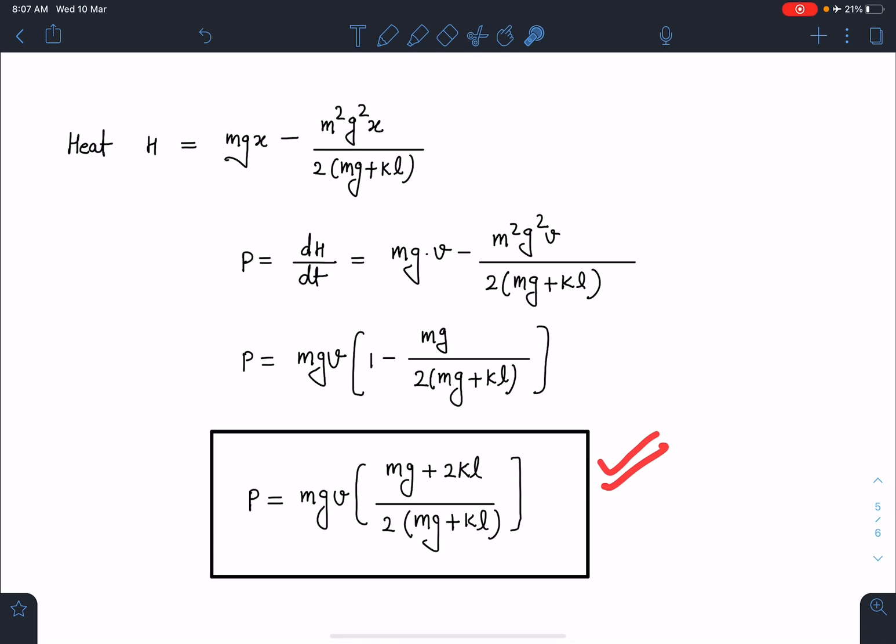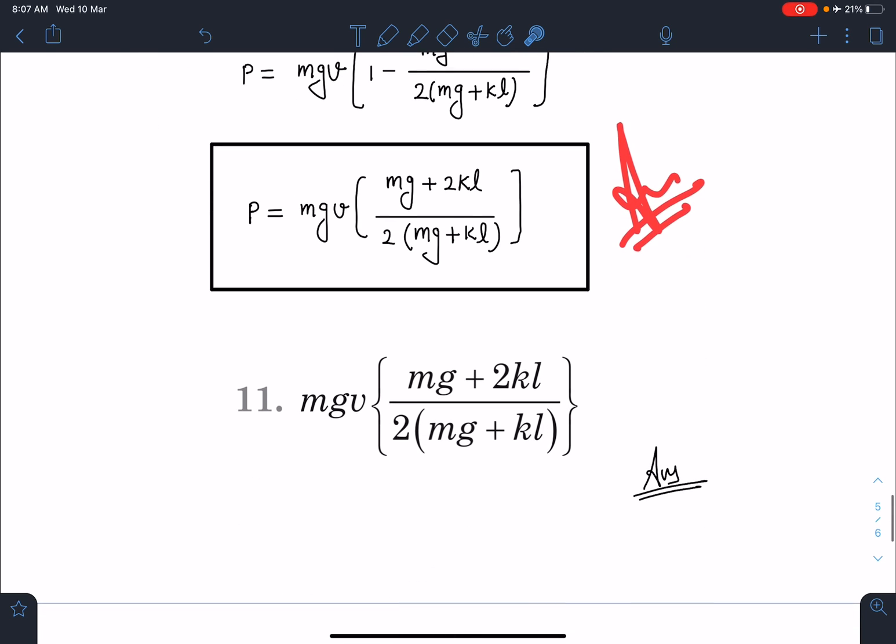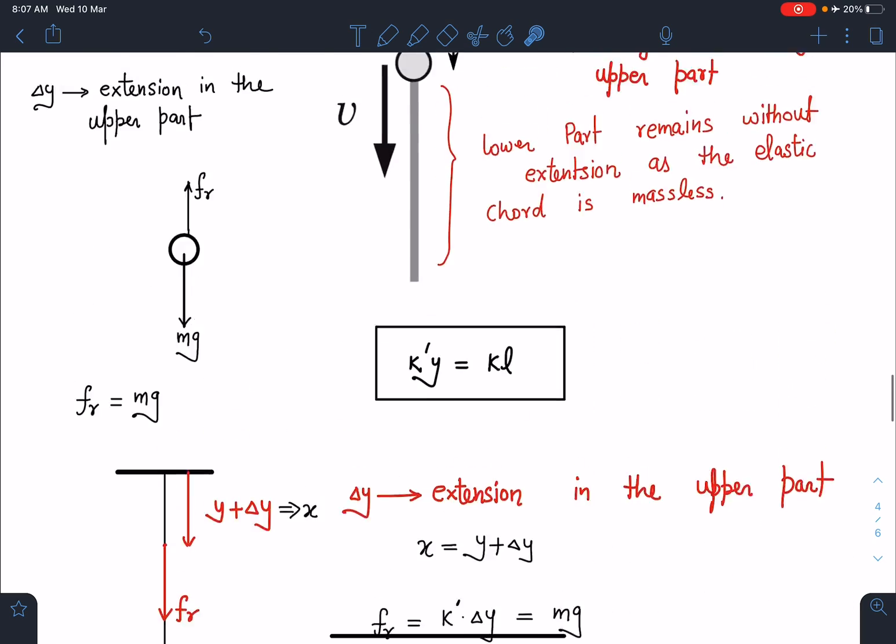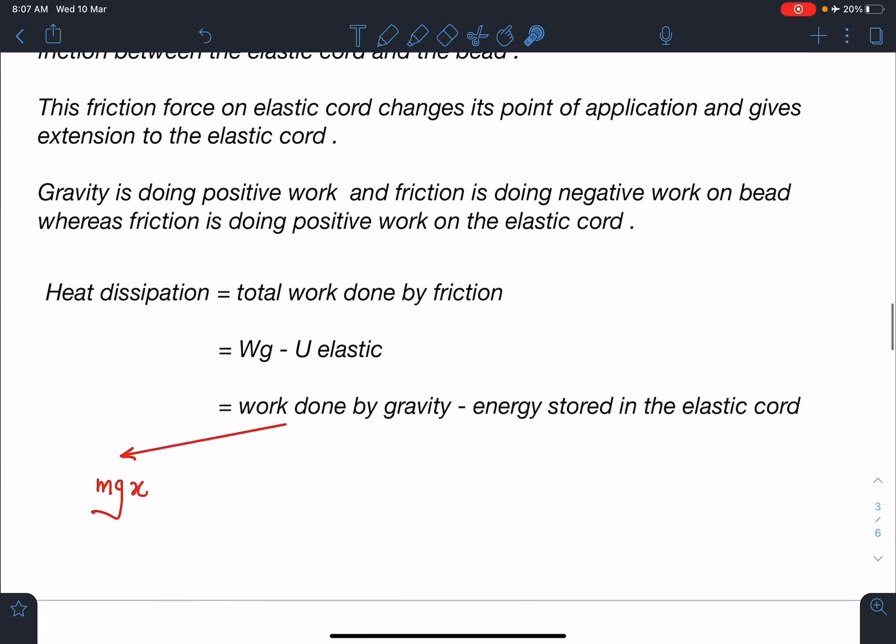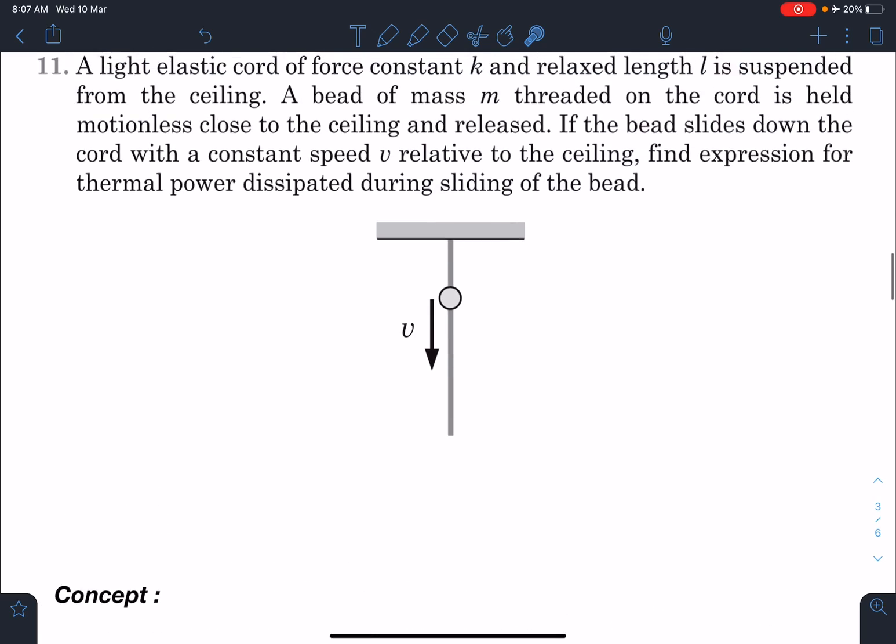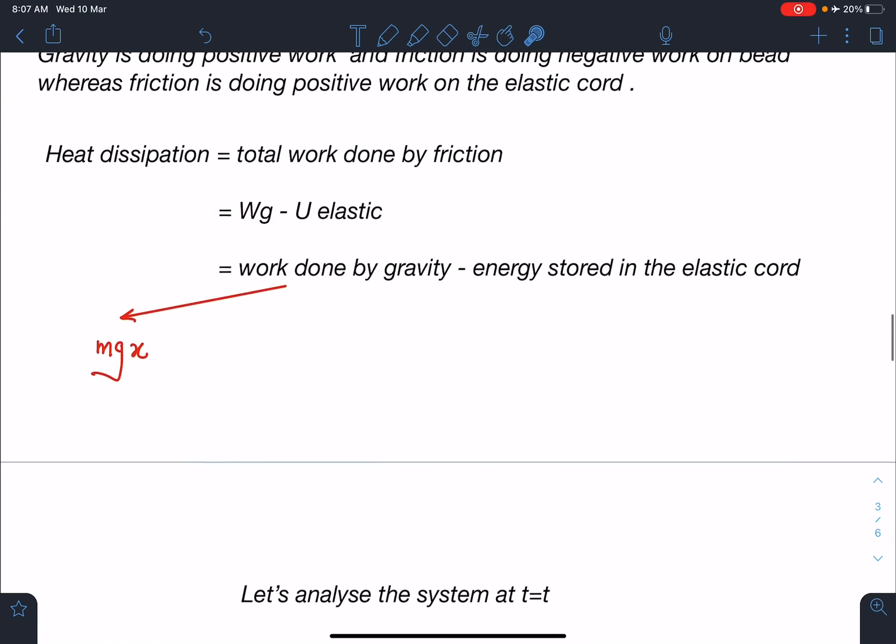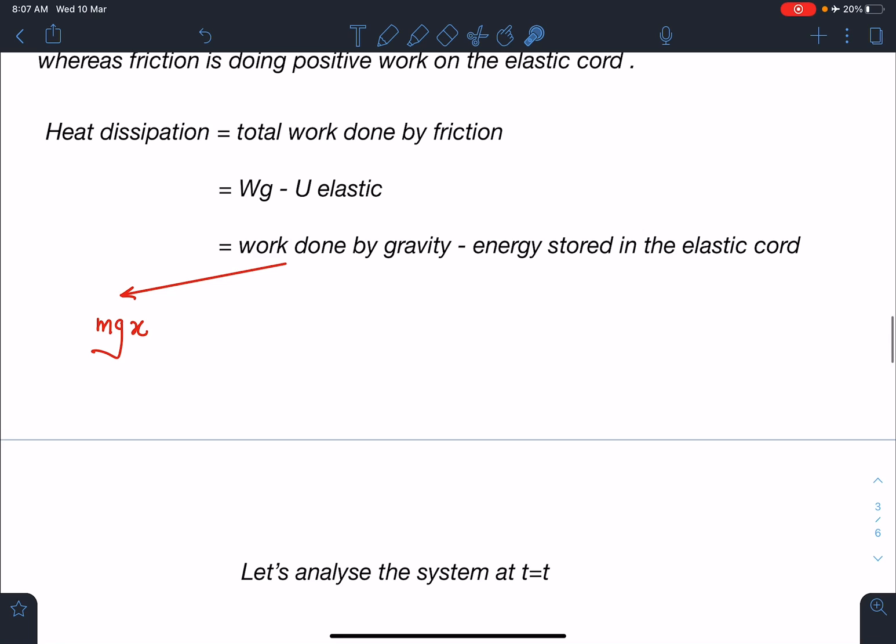Power equals mgv times (mg plus 2kl) by 2 times (mg plus kl) - this is the final answer for this problem. I hope you have enjoyed this solution. I had a tough time solving this problem when I first tried it, but yes, once you understand the logic properly, this becomes quite a fascinating problem.